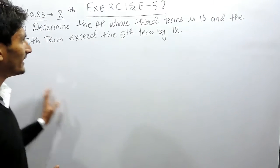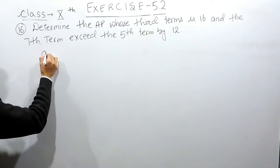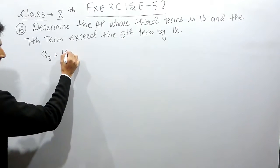In this case, you have to find the AP whose third term is 16, meaning the third term is given to you as 16. This is the first information given to you.